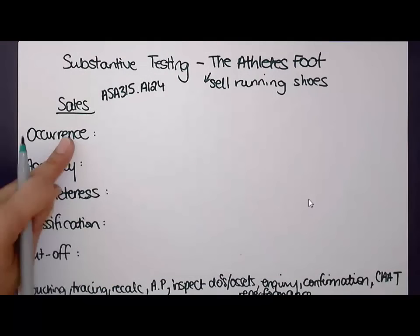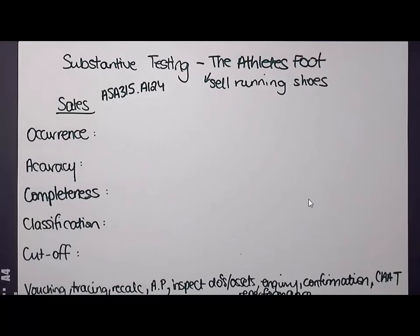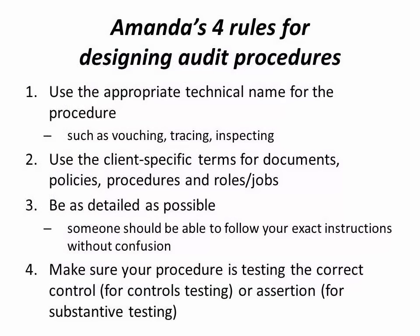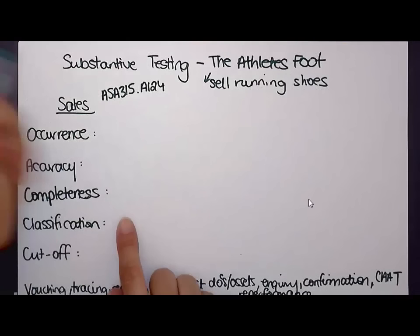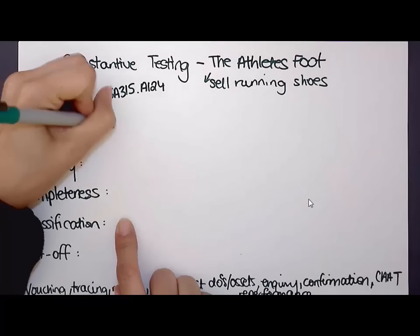I have four rules for designing my substantive tests: number one, make sure you're using the correct terminology; number two, make sure you use the right client information or names for documentation; number three, be specific so somebody can follow what you're doing; and number four, make sure you match it to the correct substantive procedure. Occurrence is usually a vouching test.